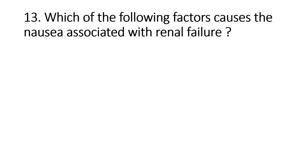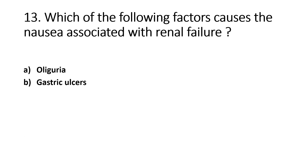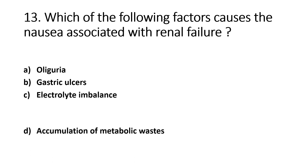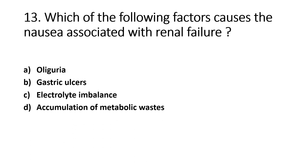Which of the following factors causes the nausea associated with renal failure? Option A - Oliguria, Option B - Gastric Ulcers, Option C - Electrolyte Imbalance, Option D - Accumulation of Metabolic Waste. The right answer is Option D. Accumulation of metabolic waste such as urea, uric acid, and creatinine in the blood causes nausea and vomiting.